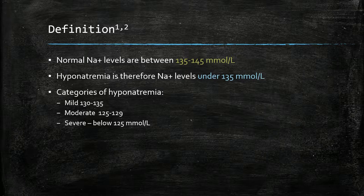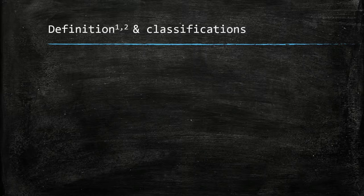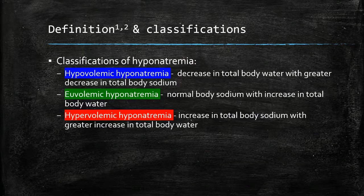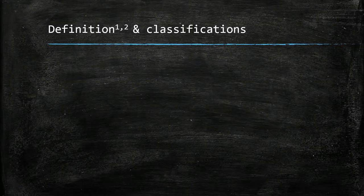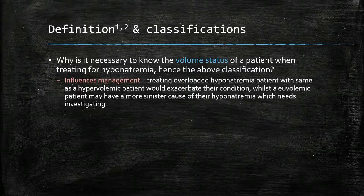Hyponatremia is also classified with fluid status, because it influences management. Hypovolemic hyponatremia has decreased total body water and further decreases in total body sodium. Euvolemic hyponatremia is normal body sodium with an increase in total body water, and hypervolemia sees a greater increase in total body water. The importance of these classifications is because it influences management.